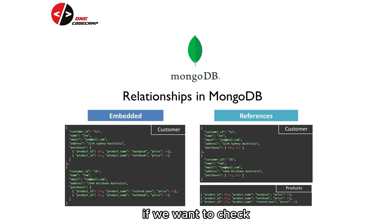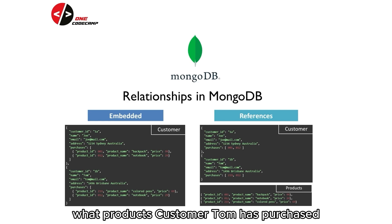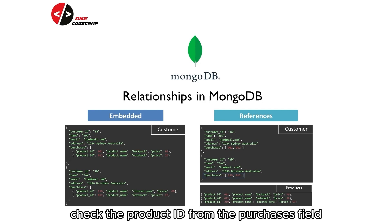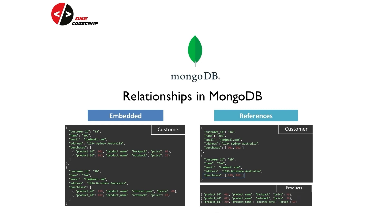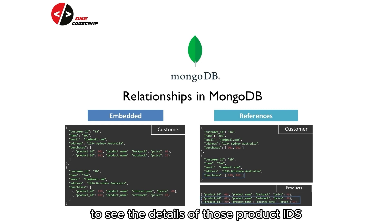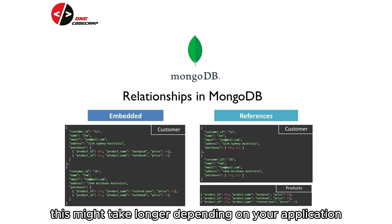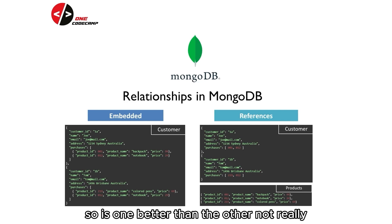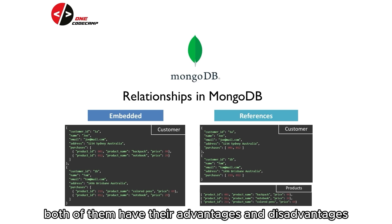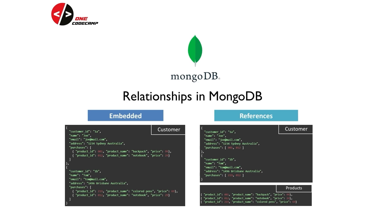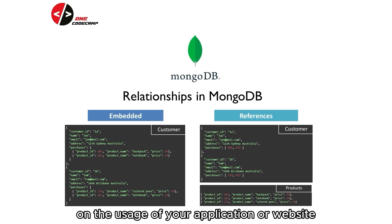For example, if we want to check what products Customer Tom has purchased, we need to query from the Customer's Collection, check the product IDs from the Purchases field, and go to the Products Collection to see the details of those product IDs. This might take longer depending on your application. So, is one better than the other? Not really — both have their advantages and disadvantages, and it will really depend on the usage of your application or website.